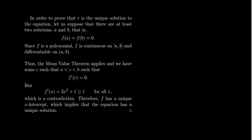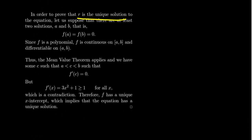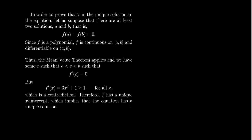Now that we know a root r exists, let's argue it is unique. Suppose for contradiction there are at least two distinct solutions; call them a and b with a < b. Since both are solutions, they are x-intercepts: f(a) = 0 and f(b) = 0. The polynomial f(x) = x³ + x − 1 is continuous on [a, b] and differentiable on (a, b), so the assumptions of the Mean Value Theorem are satisfied.